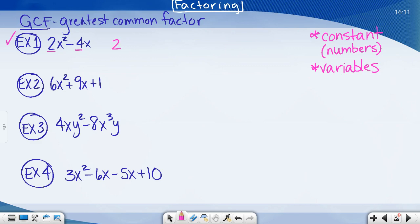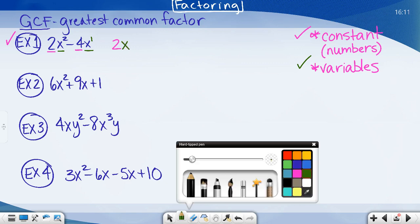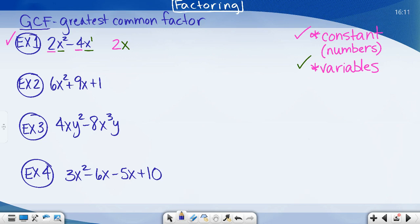Now I've handled the constants. Let's handle the variables. I have x² and x. Remember, x is essentially the same as x to the first power, meaning 1x. Between x² and x, I can actually factor out an x. When I do that, now I have to rewrite my expression with the GCF factored out.